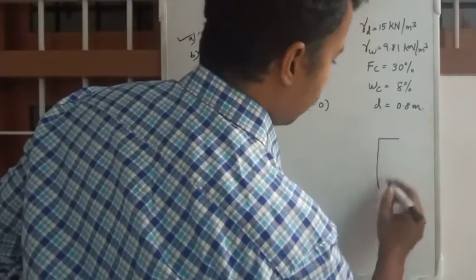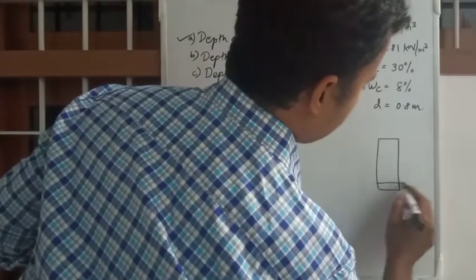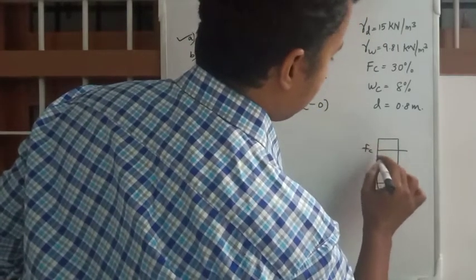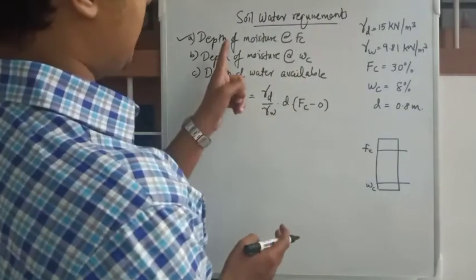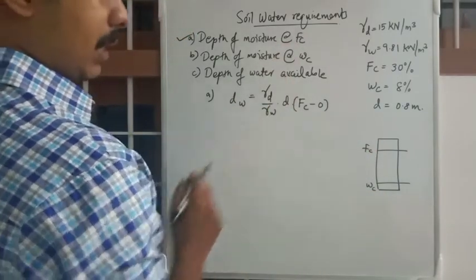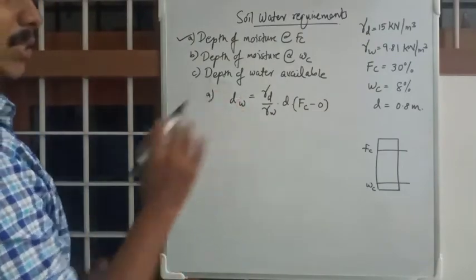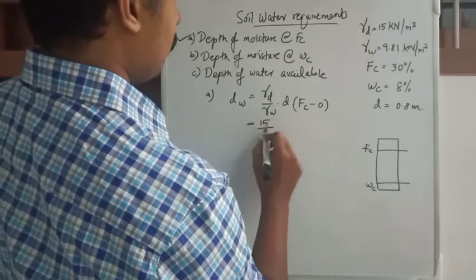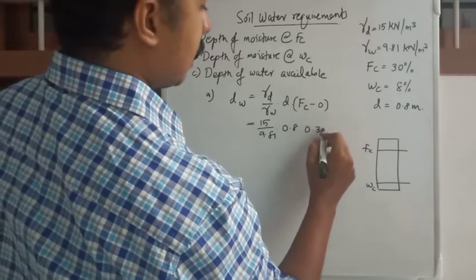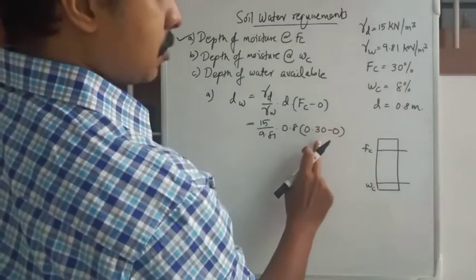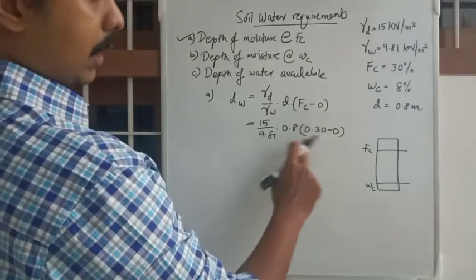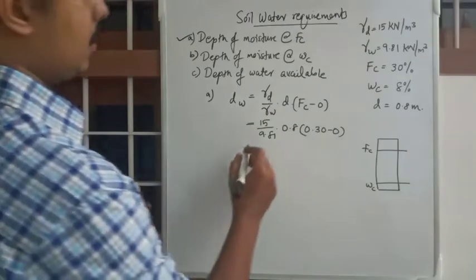To better understand: if we draw the soil mass, WC (wilting point) is the lower limit and FC is the maximum point. For the first sub-question, depth of moisture at FC, we substitute: dw = (15 / 9.81) × 0.8 × 0.30. That gives dw = 0.367 meters.